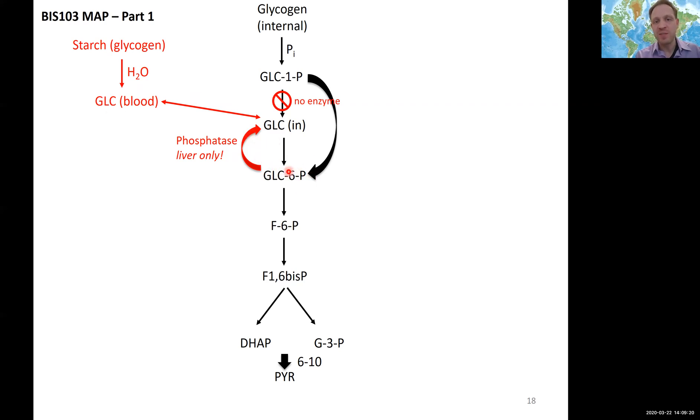For external glycogen and storage, we didn't use phosphoryl groups for cleavage, we used water, we used hydrolysis. And in this case we didn't have the issue of a phosphorylated sugar. This hydrolysis generates free glucose directly that can go into our bloodstream and can be utilized for whatever purpose in your body.